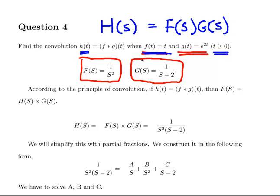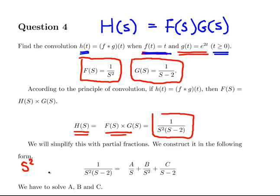So H(s) is the product of these two, which is going to be 1 over s squared times s minus 2. We are going to use partial fraction expansion for this — we want to simplify it into a couple of simple terms. We have s squared and s minus 2. Essentially, we have a polynomial of degree 2 in the denominator.